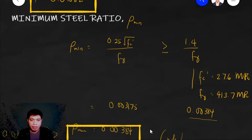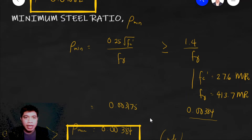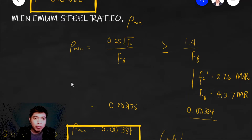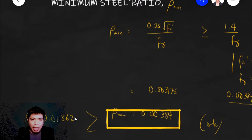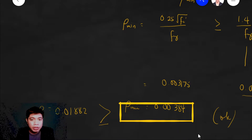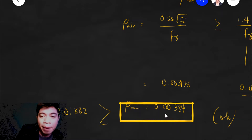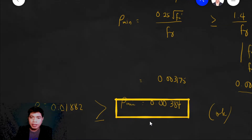Before proceeding to ρ_max, let's compare our computed ρ with ρ_min. Our ρ is 0.01882, which is greater than ρ_min of 0.00384 — so that's okay. ρ_min is supposed to be the minimum allowable steel ratio, and our ρ satisfies it.